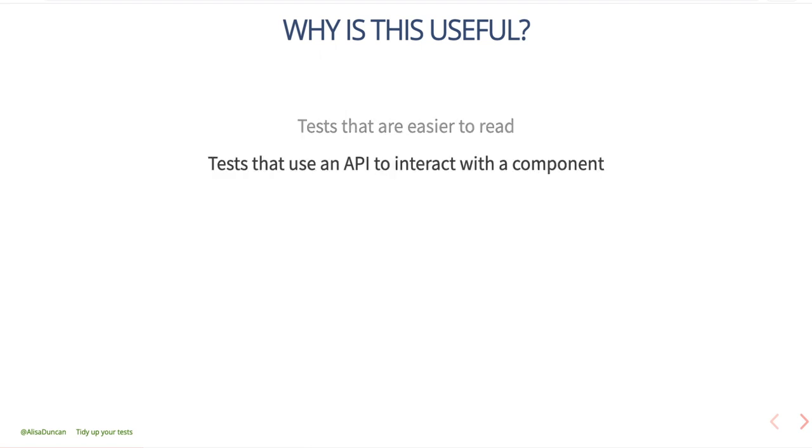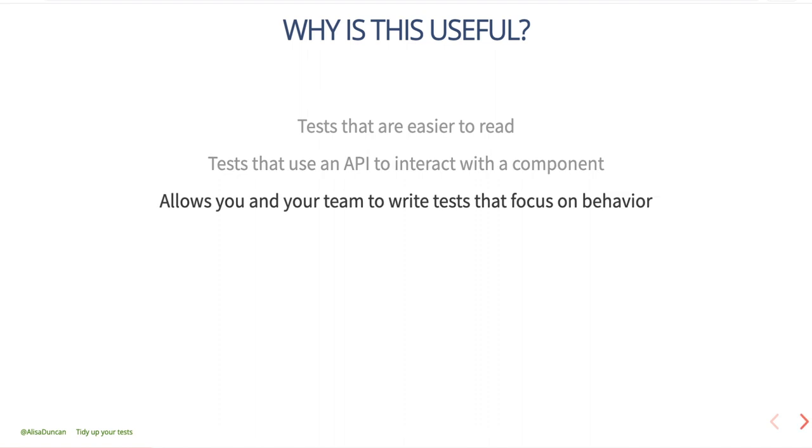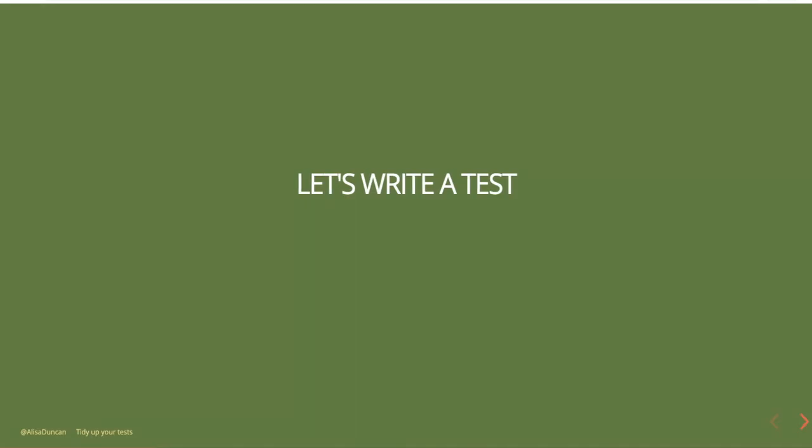This is useful because it allows you to write tests that are easier to read — you're able to tell at a glance what's going on. Your test will use an API to interact with the component, which makes your test more resilient and less prone to breakage if anything in the underlying component changes. And it allows you and your team to write tests that focus on behavior instead of worrying about implementation details.